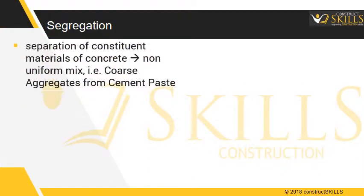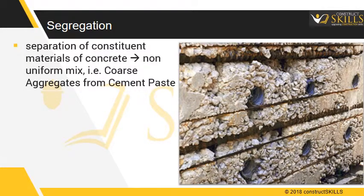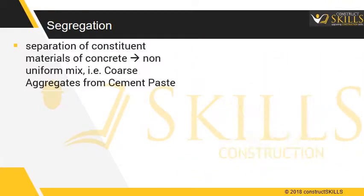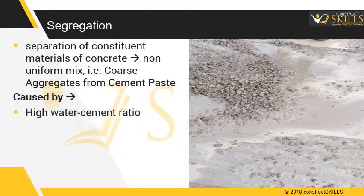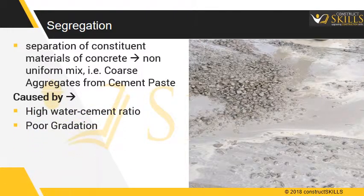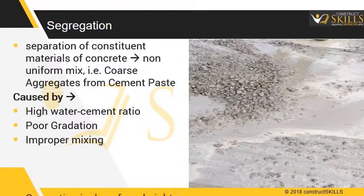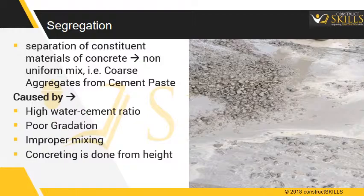Segregation is the separation of the constituent materials of concrete resulting in a non-uniform mix. For instance, separation of coarse aggregates from cement paste, which is generally caused by high water-cement ratio, poor gradation due to bad mix design, and improper mixing. The most common reason is placing concrete from height, especially for underground foundations.